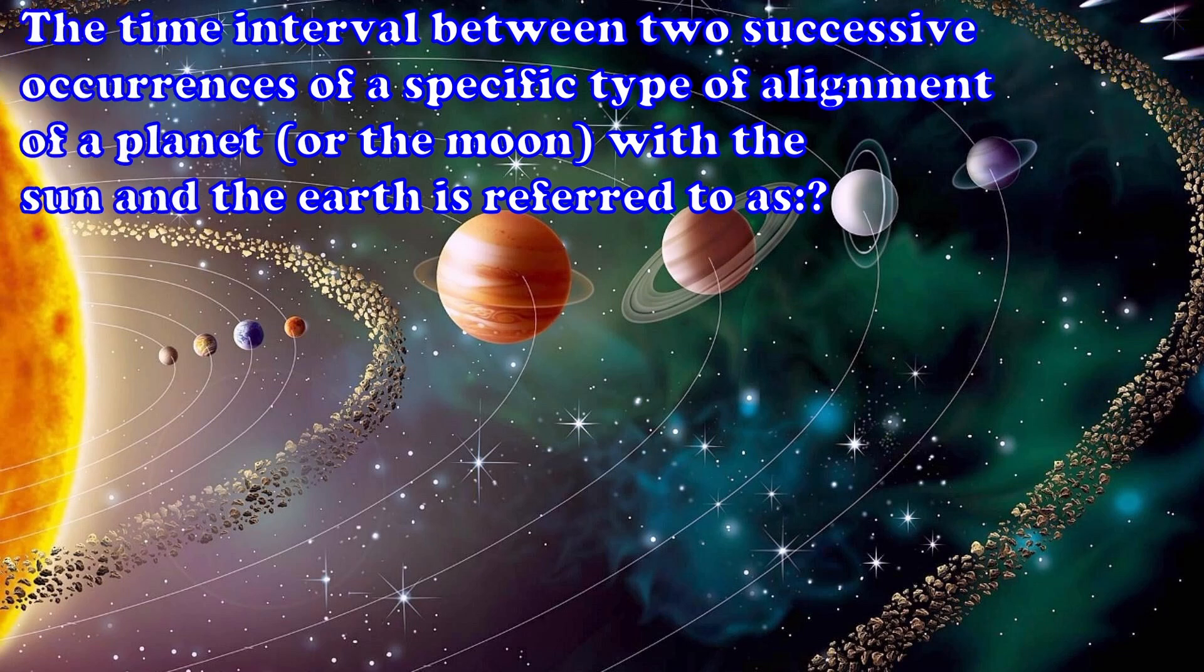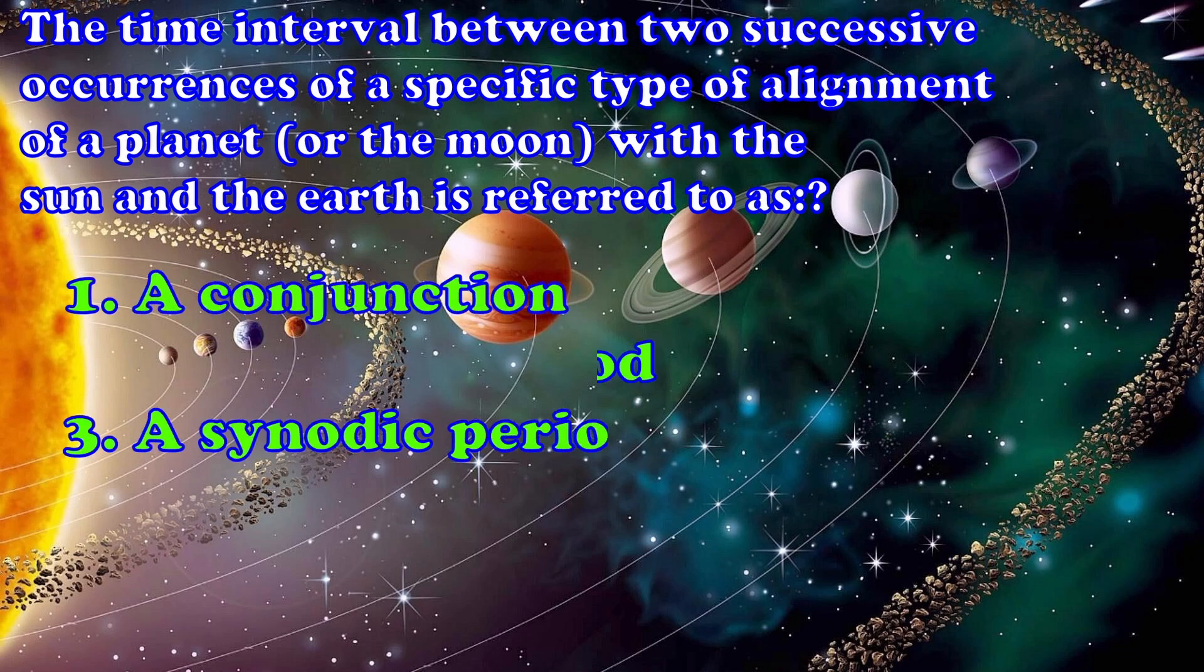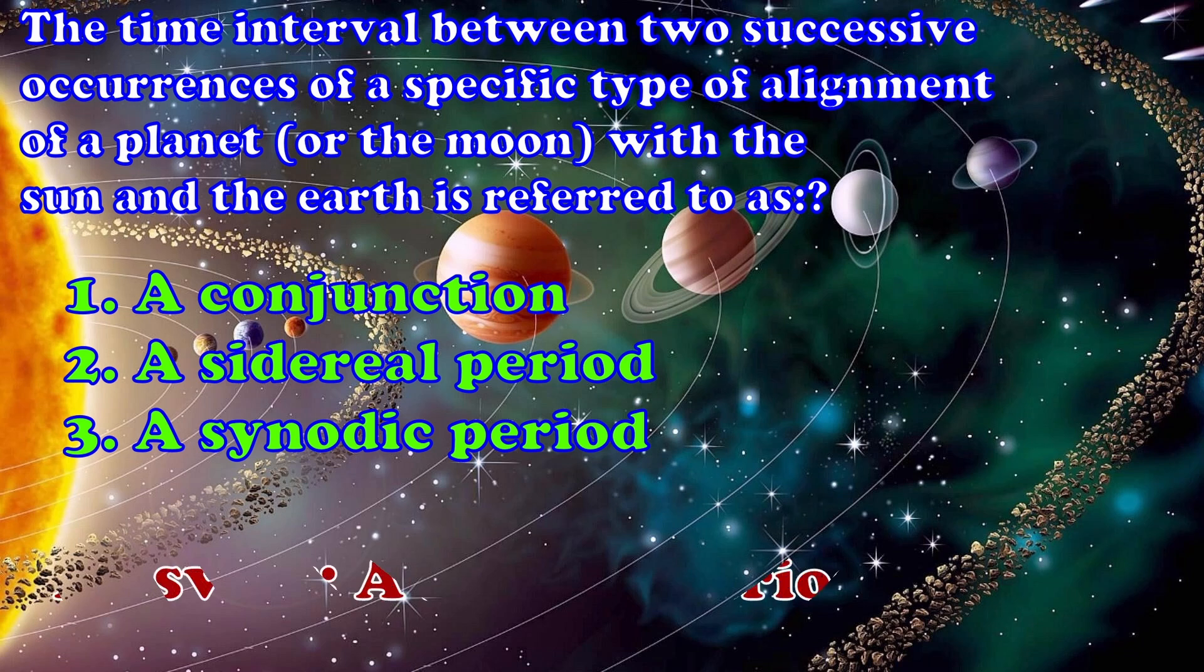The time interval between two successive occurrences of a specific type of alignment of a planet, or the moon, with the Sun and the Earth is referred to as? 1. A conjunction 2. A sidereal period 3. A synodic period. Answer, a synodic period.